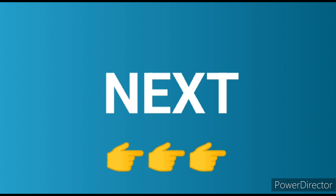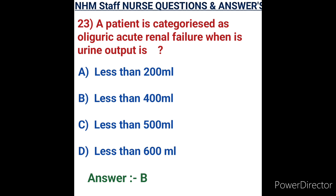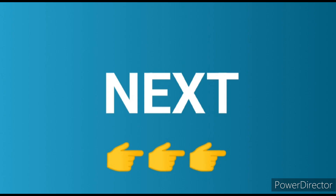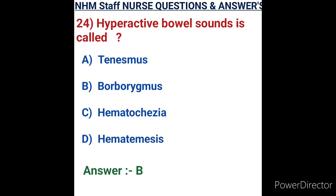Question number twenty-three: an adult patient is categorized as oliguric acute renal failure when urine output is. Options: A) less than 200 ml, B) less than 400 ml, C) less than 500 ml, D) less than 600 ml. A decreased urine output of less than 400 ml is called oliguria. This question also appeared in the NHM 2023 exam. Option B, less than 400 ml, is the correct answer.